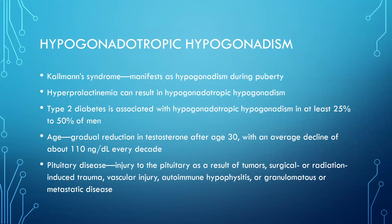Pituitary disease — an injury to the pituitary as a result of a tumor, surgical or radiation-induced trauma, vascular injury, autoimmune hypophysitis, or granulomatous or metastatic disease — can also cause hypogonadism. You can also have injury to the pituitary with a blow to the head. If the pituitary is damaged, it could fail to produce LH and FSH, with downstream effects on the gonads or testes.